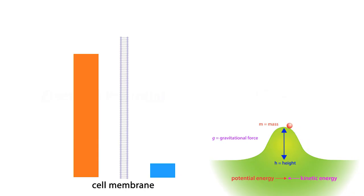Like the ball on the hill that wants to roll down, molecules want to move from high concentration to low concentration. In other words, they want to move down their concentration gradient.